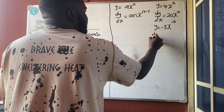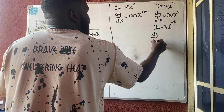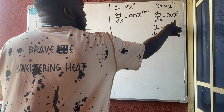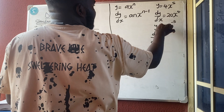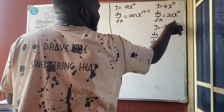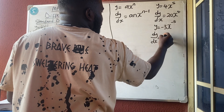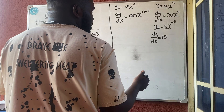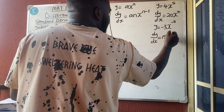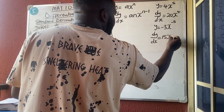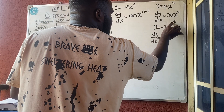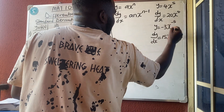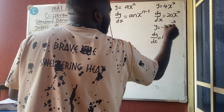...dy/dx: multiply by the power — (−3) times (−5) = 15, because minus times minus is plus — then remove one from the power: −5 − 1 = −6, giving dy/dx = 15x^(−6).